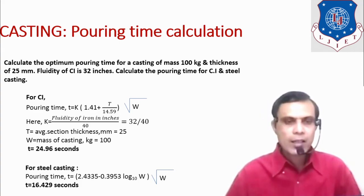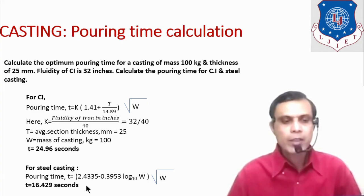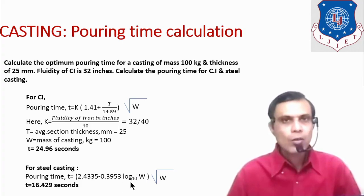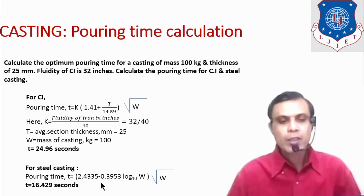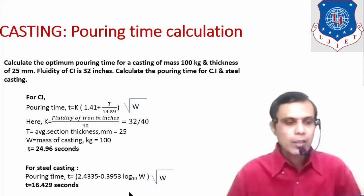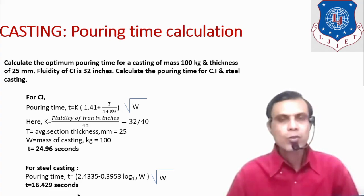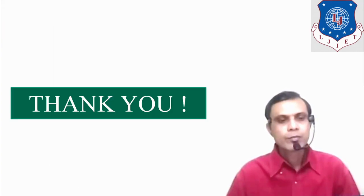For the steel casting, the optimum pouring time is calculated using the steel formula where log W is to base 10. Substituting all values gives pouring time T = 16.429 seconds for the steel casting. Thank you for watching.